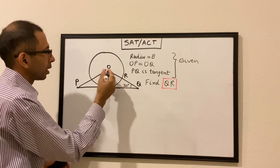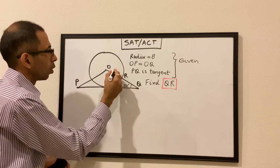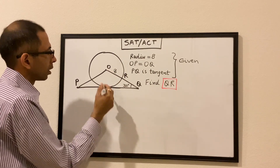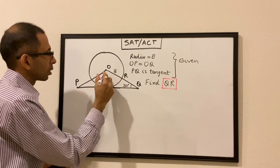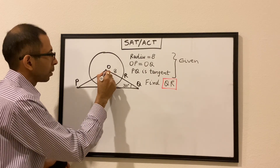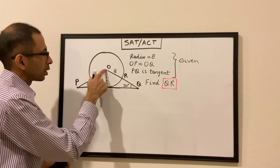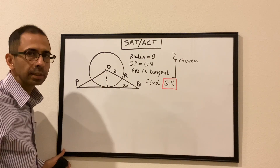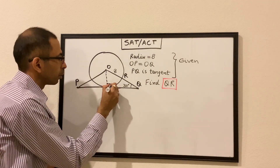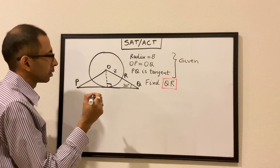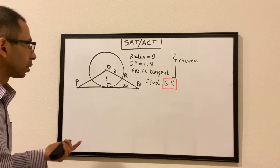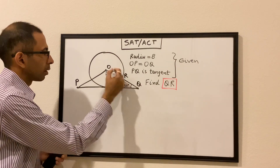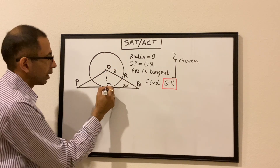The radius of the circle is given as 8, hence OR is 8. PQ being a tangent to the circle — if we drop a perpendicular from the center to the tangent, it will cut the tangent at 90 degrees. So this angle would be 90 degrees.